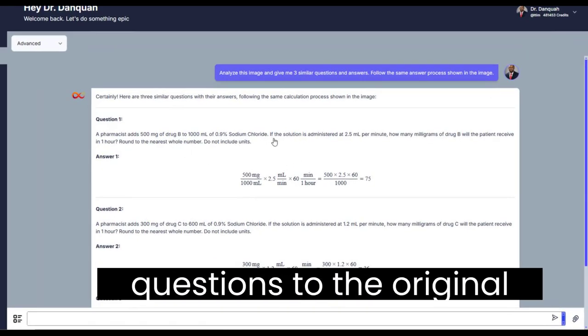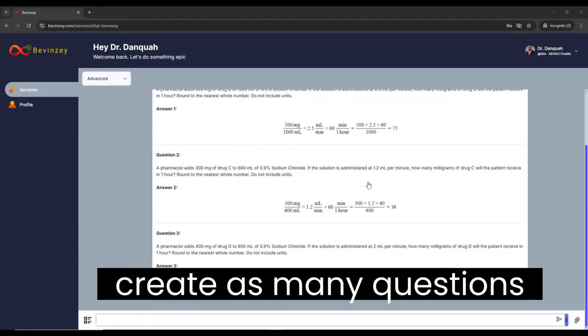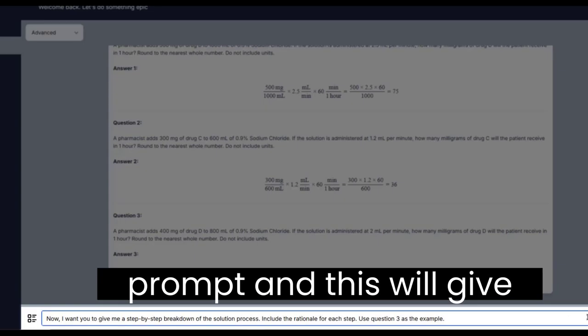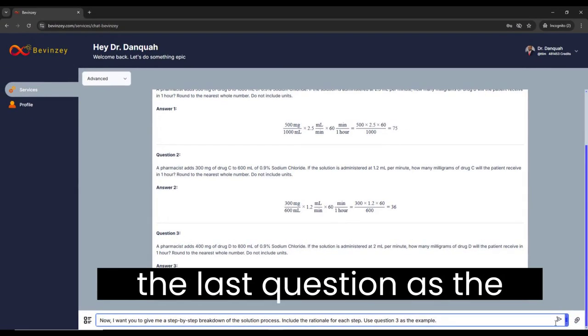You have three similar questions to the original with the same solution approach, and you can create as many questions as you like. Now you can take this a step further and enter this prompt. This will give you the rationale behind each step in the solution. We're going to use the last question as the example.